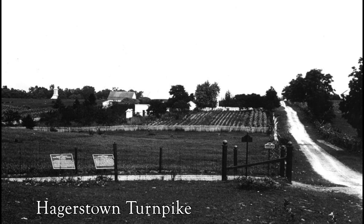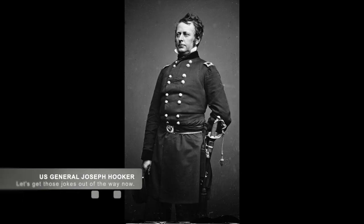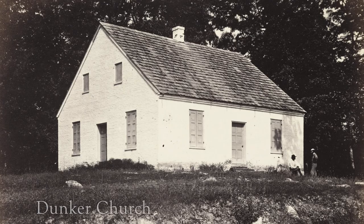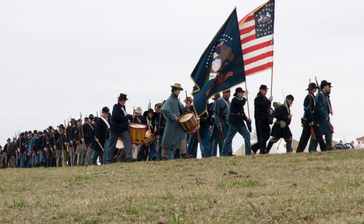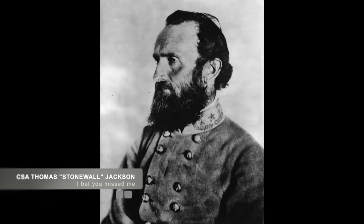The Union started to fight on September 17th. Union forces moved down the Hagerstown Turnpike, commanded by Union Major General Joseph Hooker and his First Corps. Their aim was Dunker Church, a small whitewashed building belonging to the local German Baptists. Hooker's men numbered about 8,600, while the defenders were led by Confederate Major General Thomas Stonewall Jackson and his 7,700 men.